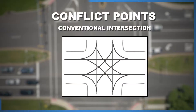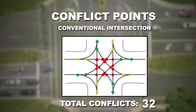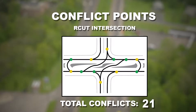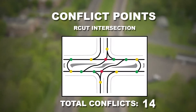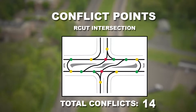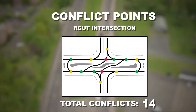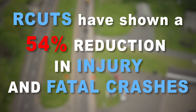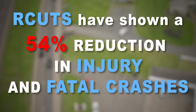While there are 32 conflict points at a conventional intersection, an R-cut intersection can reduce those conflict points to only 14. The remaining conflict points are generally in the same direction and are therefore less severe. R-cuts have shown a 54% reduction in injury and fatal crashes.